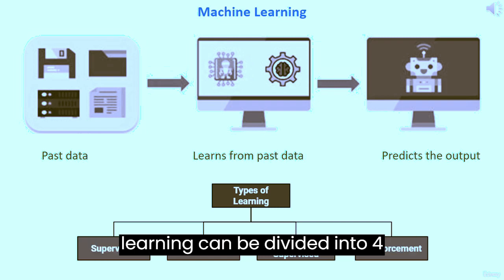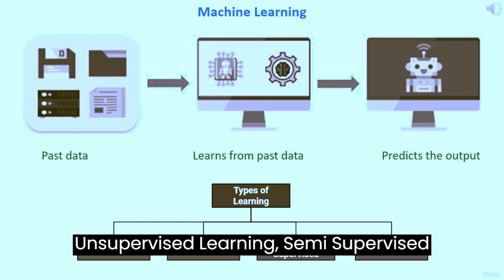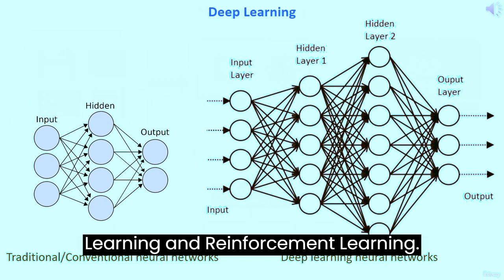Machine learning can be divided into four categories: supervised learning, unsupervised learning, semi-supervised learning, and reinforcement learning.